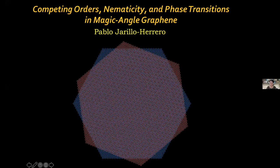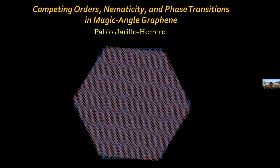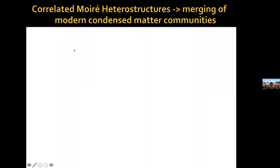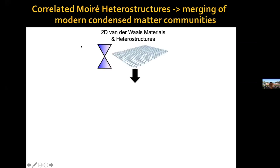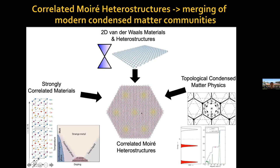Related to the topic of this conference: competing orders, nematicity, etc. I imagine there might be a number of people who are not so familiar with this, so let me give some context. This field of correlated moiré structures has meant the merging of various condensed matter communities — the 2D van der Waals materials community, the strongly correlated materials community such as cuprates, and the topological condensed matter physics community. I find this personally most appealing — I'm learning so much from talking to so many of you.